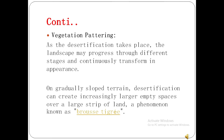The next effect is vegetation loss. In desertified areas, the land and soil become largely empty of species — the entire landscape becomes barren. The landscape continuously transforms in appearance, and vegetation cannot grow on that type of land.